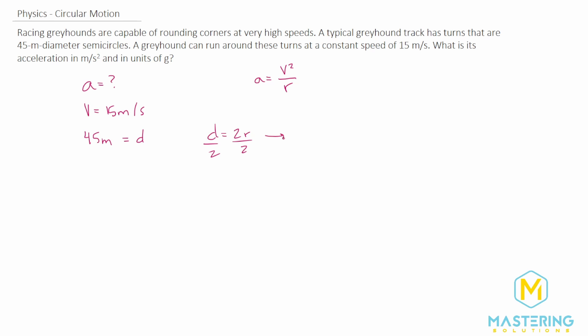So if we isolate this, we'll divide both sides by 2. The radius is equal to the diameter divided by 2. So the radius for this track is 45 meters divided by 2, which is 22.5 meters.